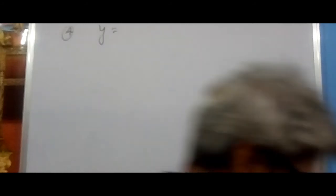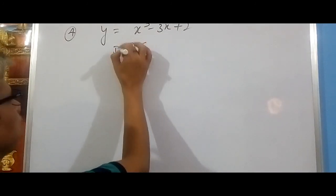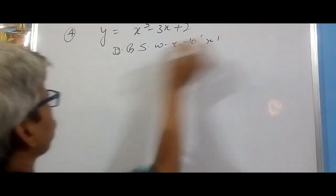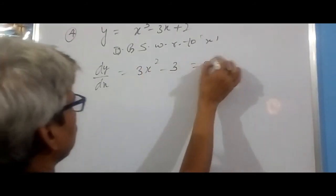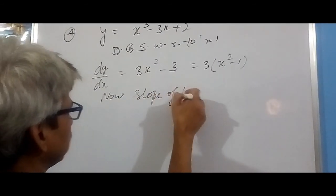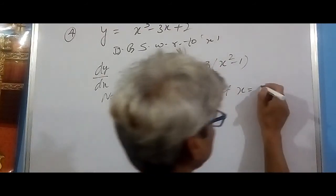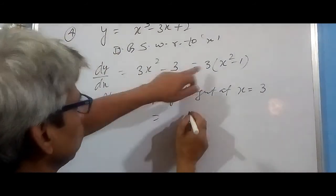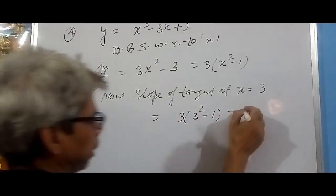If you are given the equation of the curve: y = x³ - 3x + 2. Now differentiating both sides with respect to x, dy/dx = 3x² - 3, which is 3(x² - 1). Now slope of tangent at x = 3: dy/dx = 3(3² - 1) = 3(9 - 1) = 3 × 8 = 24. So the answer is 24.